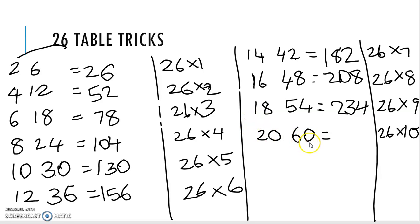Last 1, write this 0 first. Then 0 plus 6, 6. Then this 2. So now let's check it. 26×1 is 26. 26×2 is 52. 26×3 is 78. 26×4 is 104. 26×5 is 130. 26×6 is 156. 26×7 is 182. 26×8 is 208. 26×9 is 234. 26×10 is 260.